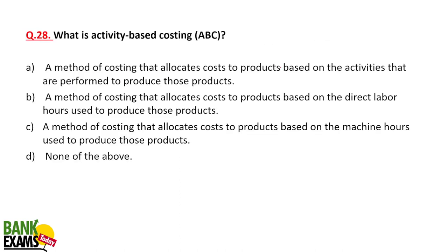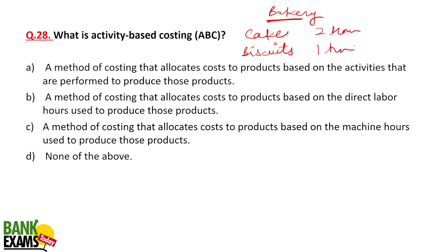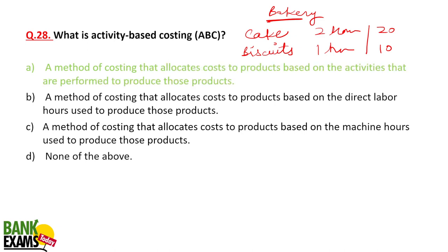Activity based costing revisited: in the bakery example, for 1 kg of cake you need to bake for 2 hours (20 rupees of electricity), and for 1 kg of biscuits you bake for 1 hour (10 rupees of electricity). You allocate cost according to the activities and expenditures involved. Activity based costing is the method of costing that allocates costs to products based upon the activities required to produce them.